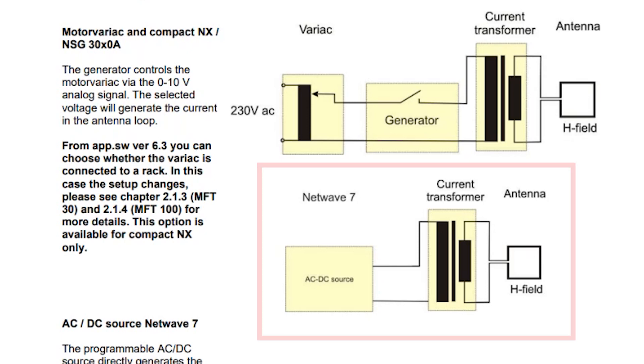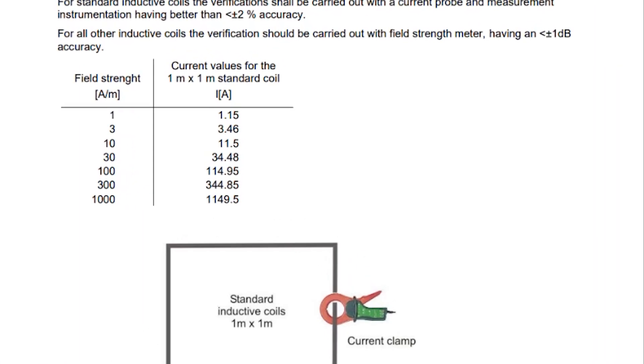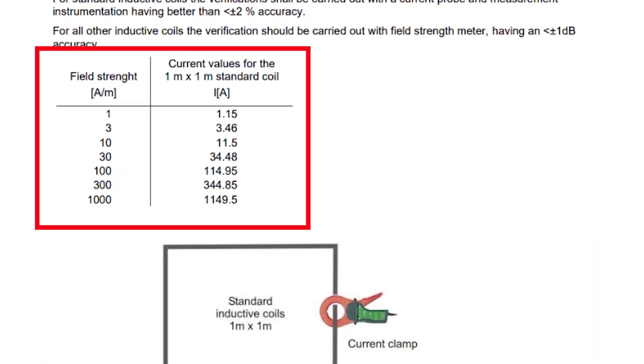Now let's take a look at the verification. We're on page 24 section 2.3 which is the verification required for IEC 61000-4-8. You can see midway down the page we have a table that's particularly helpful. There we have our field strength in amps per meter and current values in amps based upon the one meter by one meter standard coil which the MFC 1000 series conforms to.